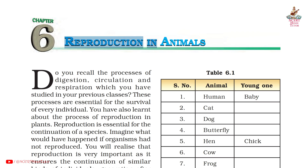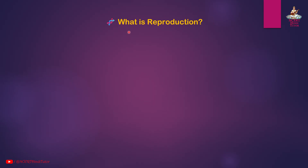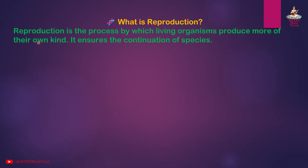Chapter 6: Reproduction in Animals — Short Notes and Keywords, Class 8 Science. Reproduction is the process by which living organisms produce more of their own kind. It ensures the continuation of species.